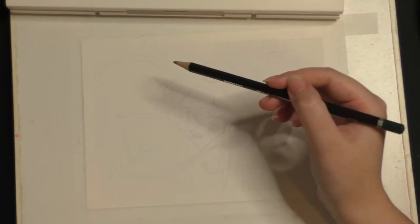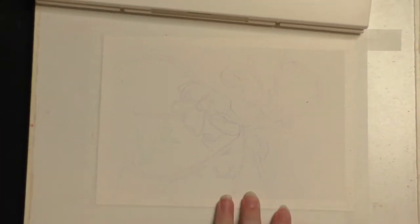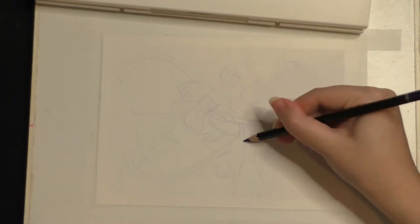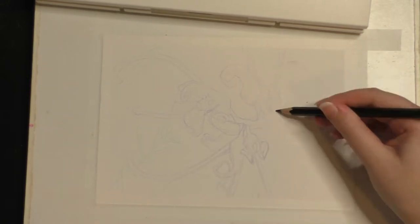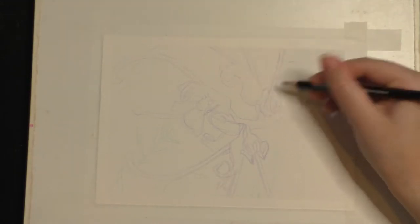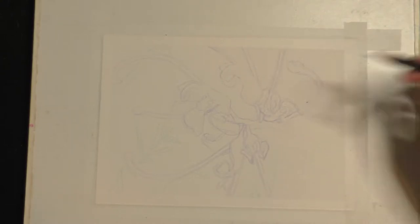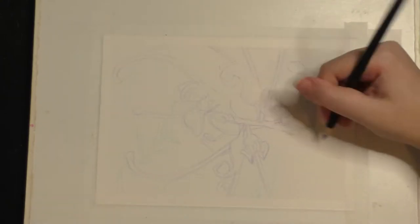To begin, I do my usual taping the watercolor paper down. This is 300 gsm, so the thicker the paper, the less likely it is to warp. Obviously if you put a lot of water in it, it still potentially can, but you just try not to saturate or drench your paper when you are painting.